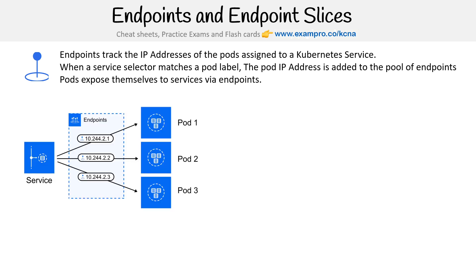So here's the graphic. The idea is that we have a service, and we learned that services are used to load balance to multiple pods. But the question is, how does a service link to a pod? And the answer is endpoints. Each pod has a dynamic IP address, so the idea is that you're storing the dynamic IP address in endpoints, and they exist in this endpoint pool. It's the connection between services and pods.